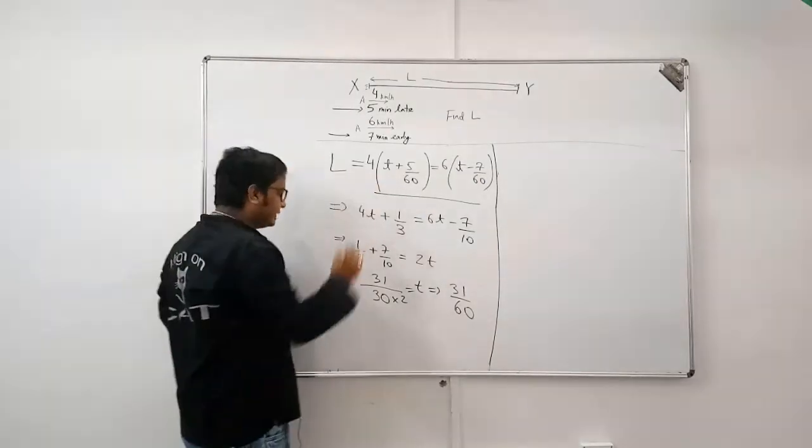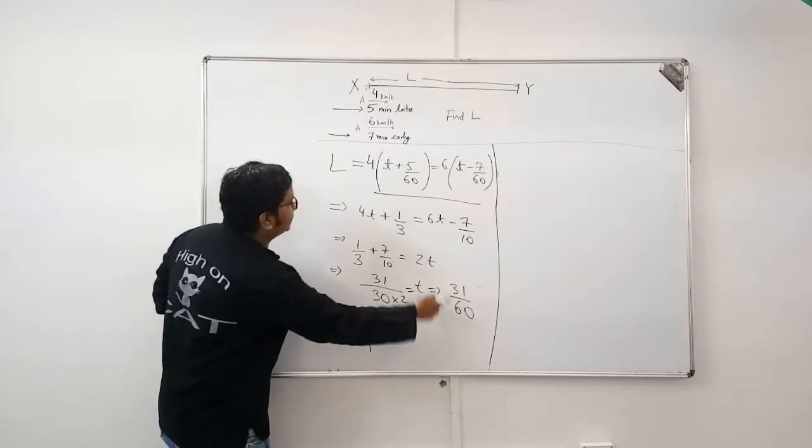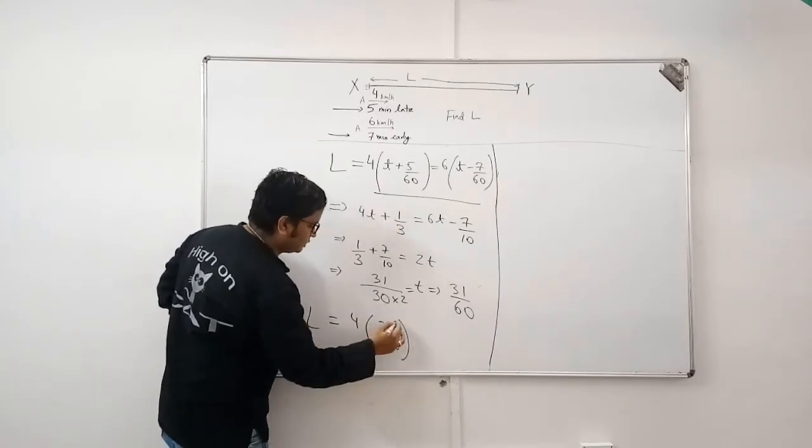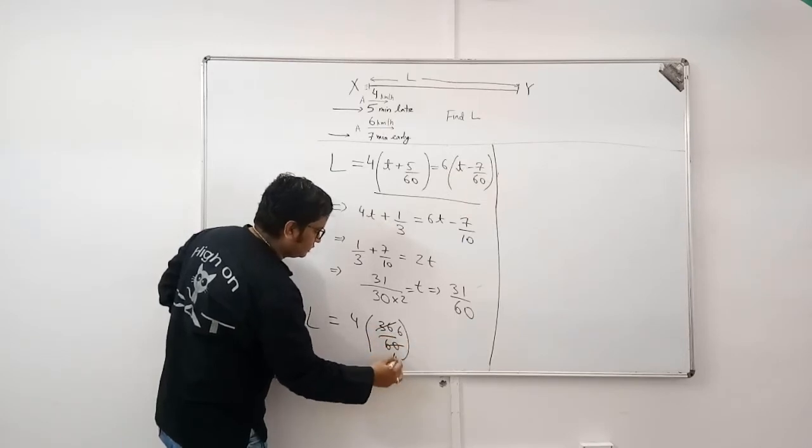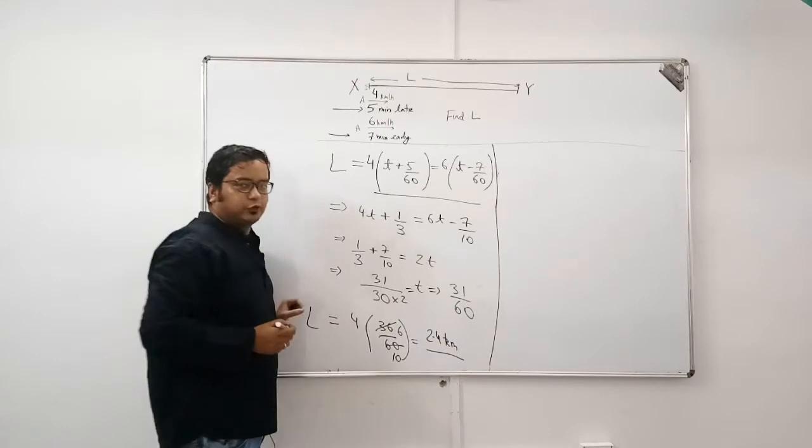L is equal to 4 into, put in T here. 2.4 km.